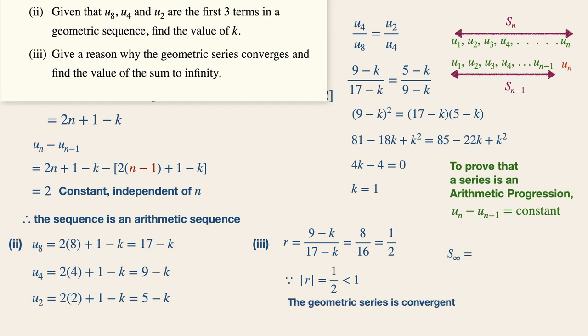To find the sum to infinity of this geometric series, it is given by the formula a over 1 minus r, where a is the first term of the series.